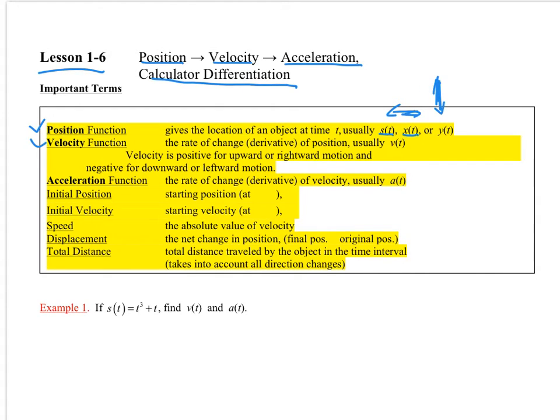A lot of times we'll see S of T, we'll see X of T, which means that we'll probably be moving on a horizontal line like the X-axis, and Y of T, which means that we're going to be moving up and down on the Y-axis. Velocity function, the rate of change of the position. Usually we call it V of T. Velocity is positive for upward or rightward motion.